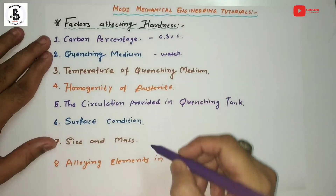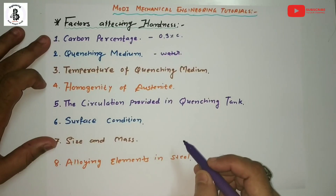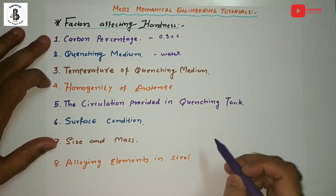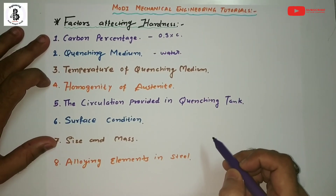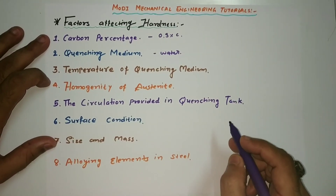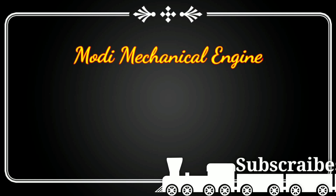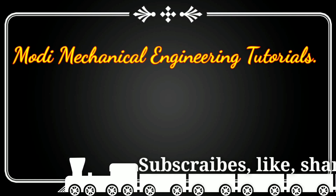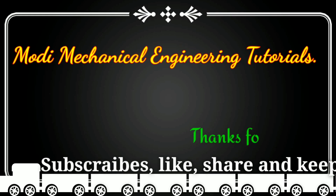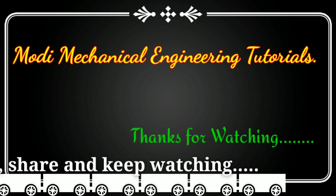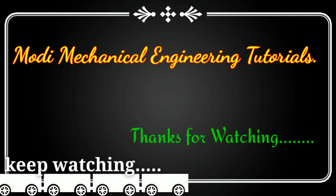So these eight are the major factors affecting hardness in steels. I hope you understand this. If you like this, please subscribe and share more mechanical engineering tutorials. Thank you so much and keep watching.